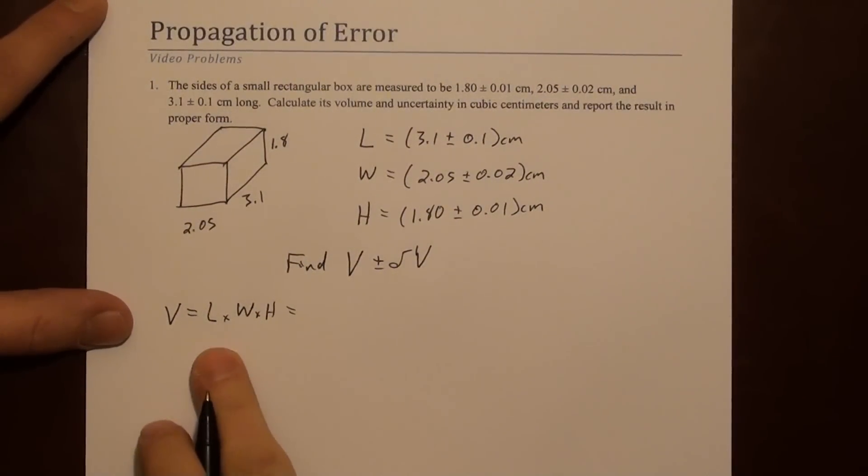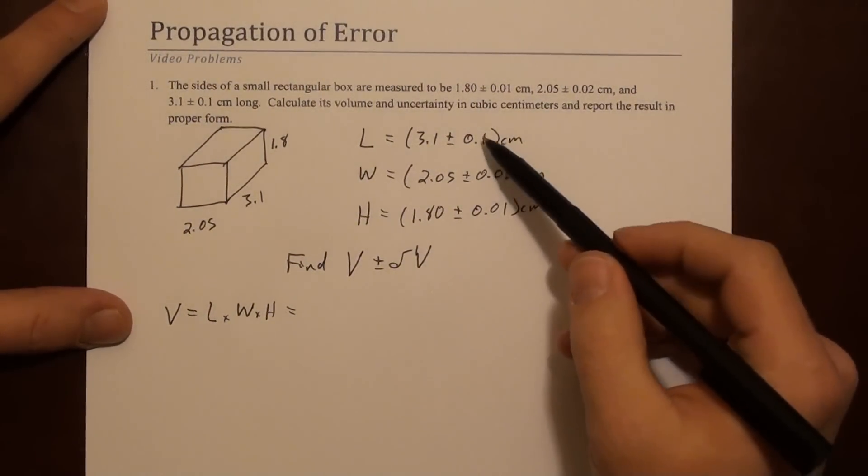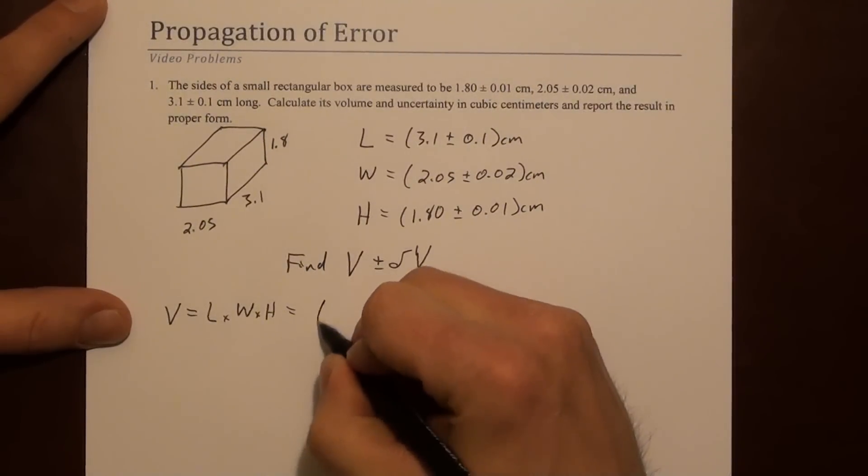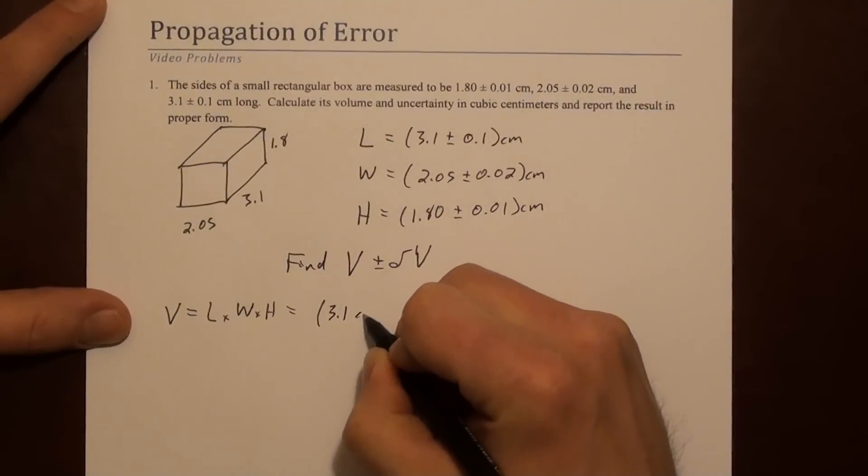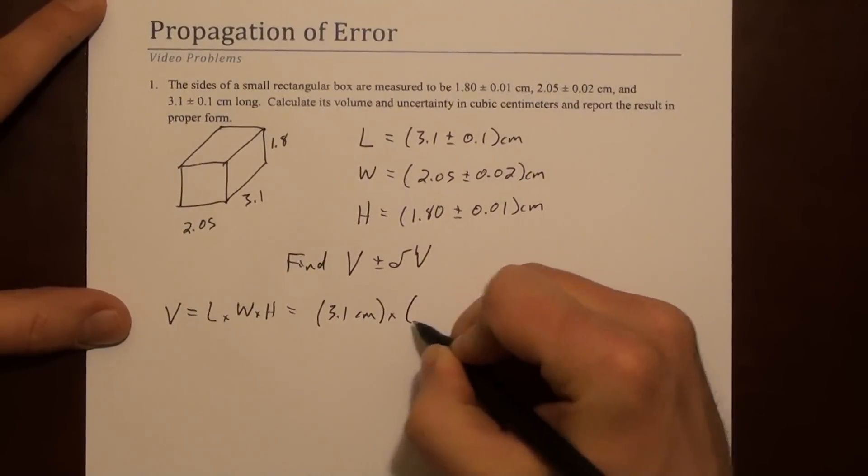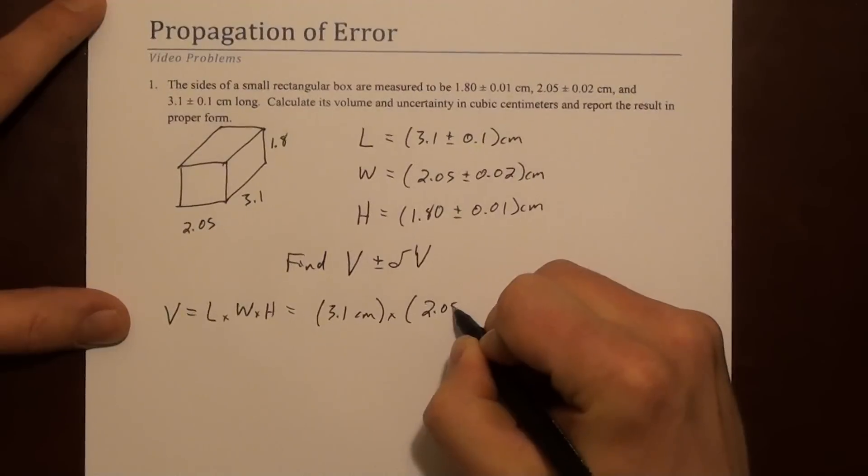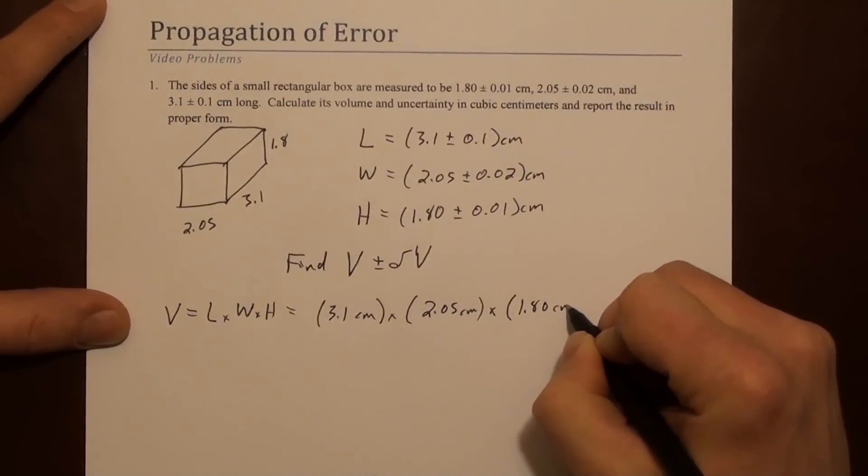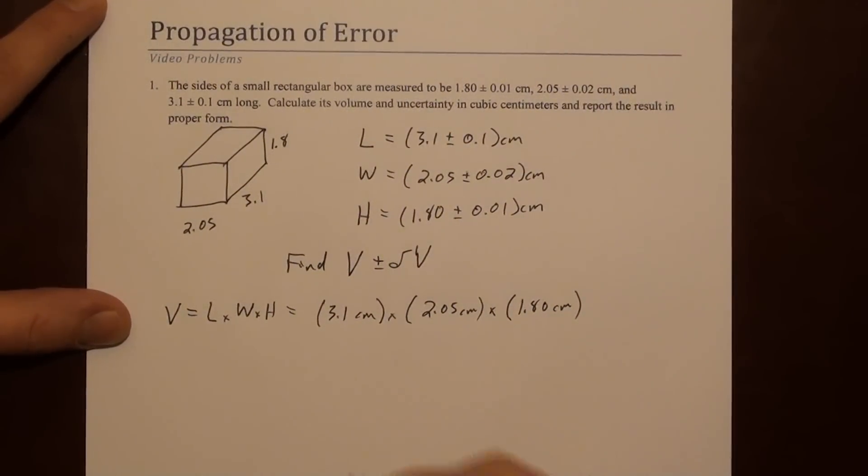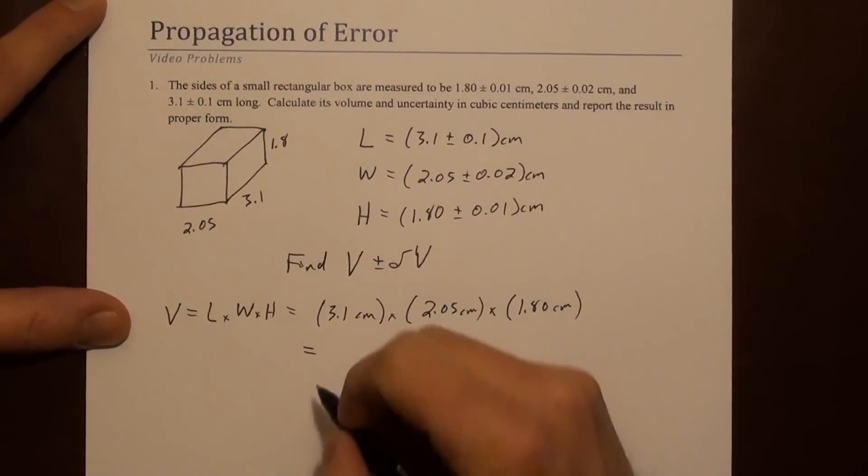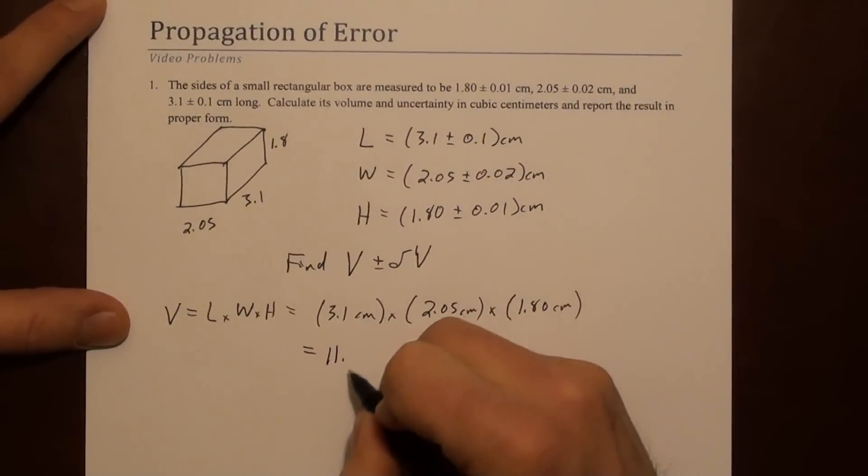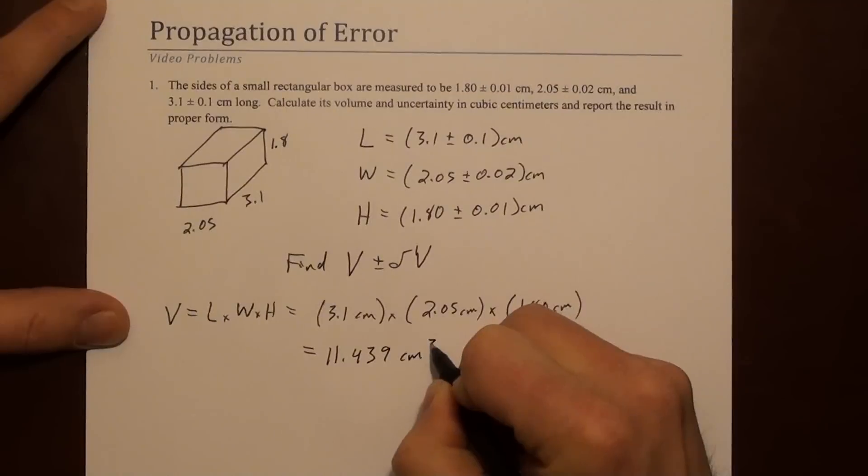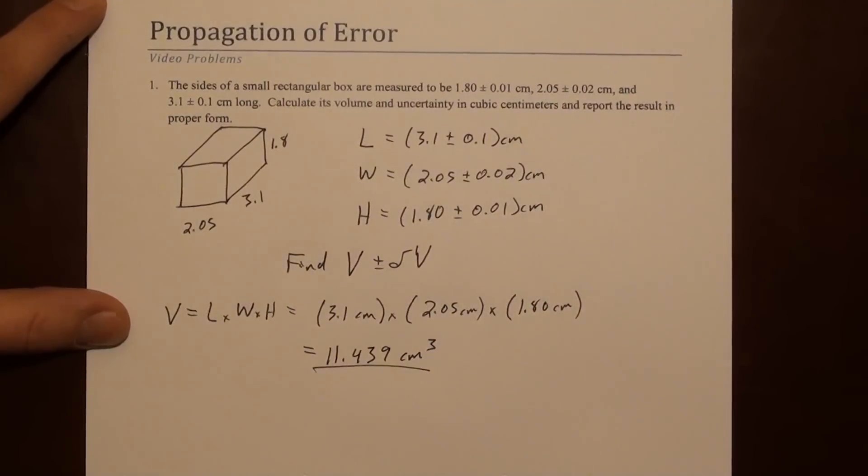So in this step we can ignore these errors, the 0.1, the 0.02, the 0.01. We're just dealing with the 3.1, the 2.05, and the 1.8. And if you do that math you end up with 11.439 cubic centimeters. So that's the volume.